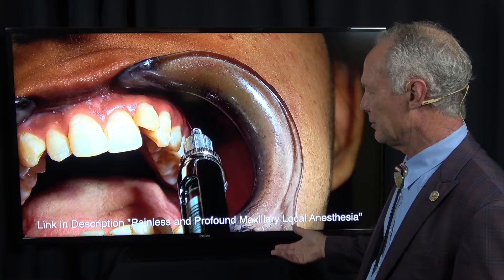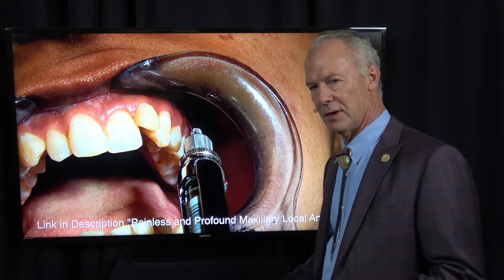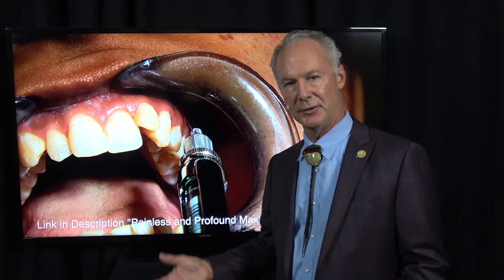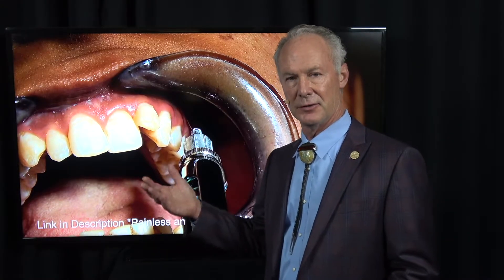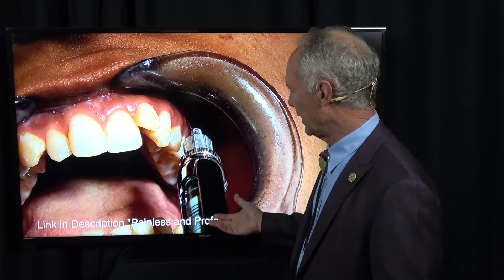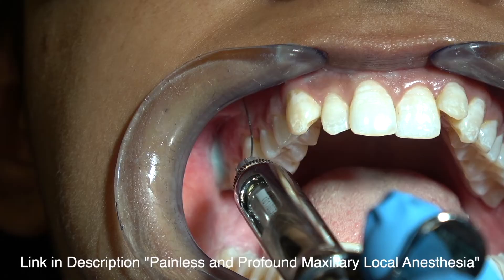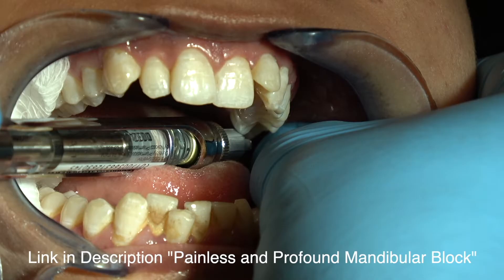This is after the patient's been sedated. If you're certified, you can either use IV intravenous sedation or oral sedation. Many people do it with Halcion, which is a sleeping pill. You can sedate people with oral Demerol and Valium, and then we give them painless and profound local anesthesia.